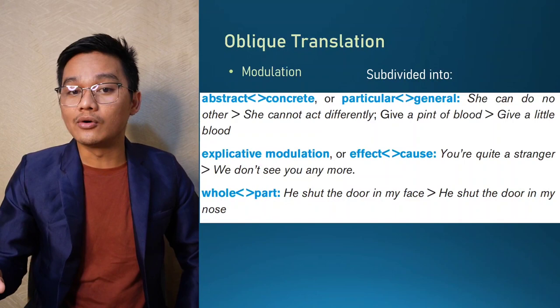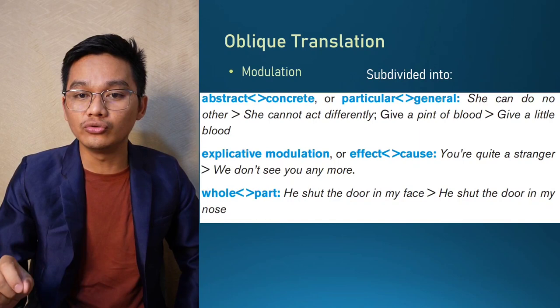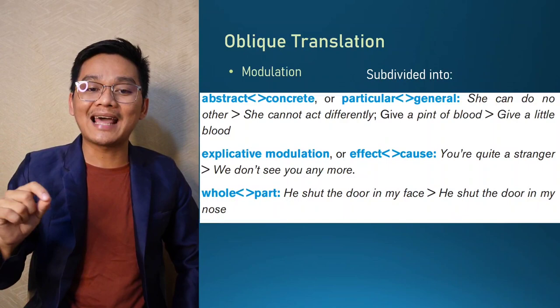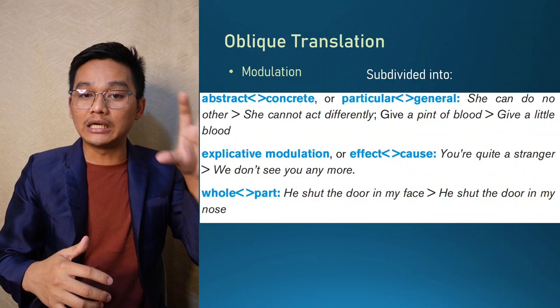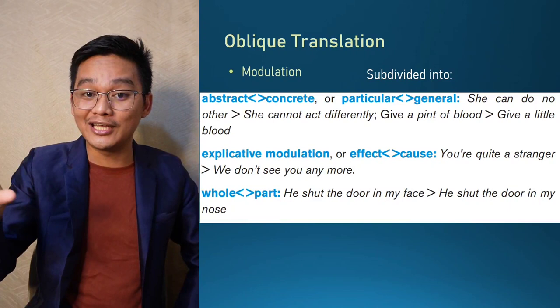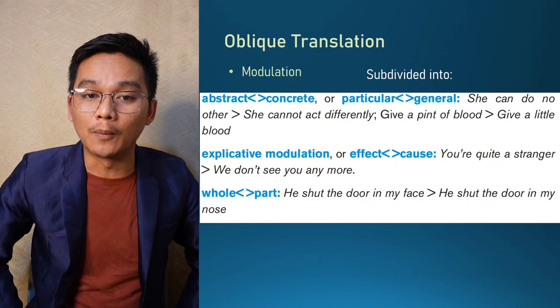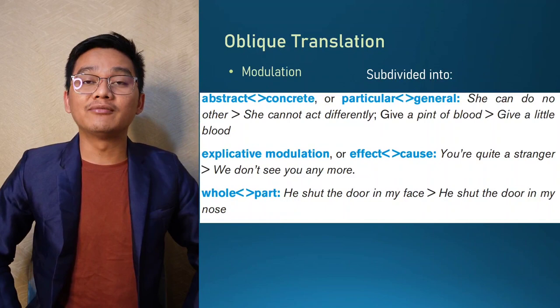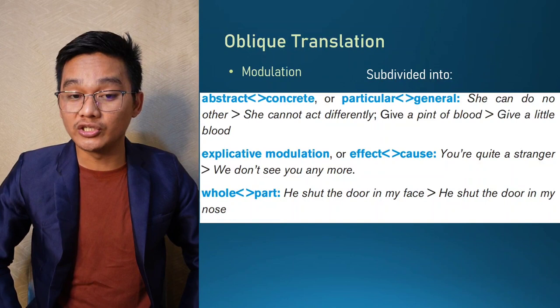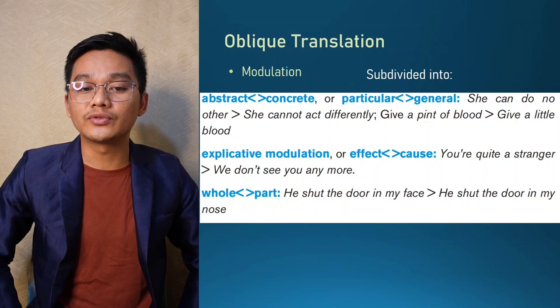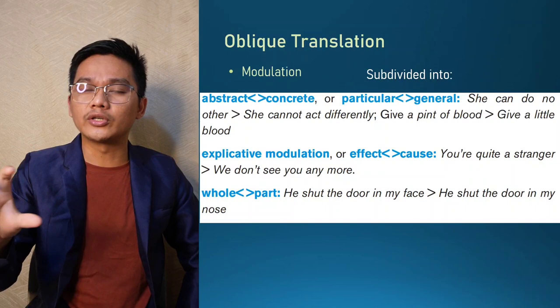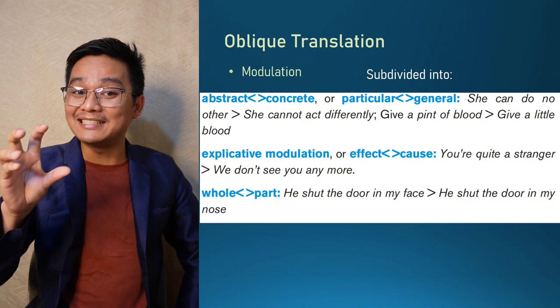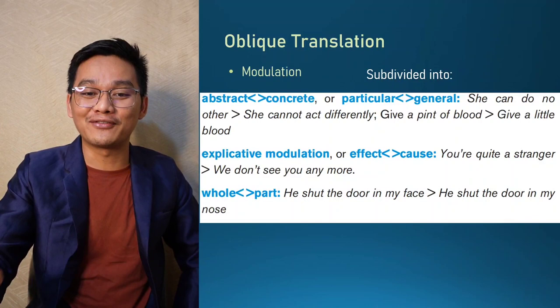The first subcategory is abstract and concrete, or particular and general. For example, 'she can do no other' can be modulated into 'she cannot act differently' — from abstract to concrete. From particular to general: 'give a pint of blood' (particular/specific) becomes 'give a little blood' (general). Another category is explicative modulation or effect and cause: 'you're quite a stranger' becomes 'we don't see you anymore' — the nuances of meaning are retained but the expression is modulated.